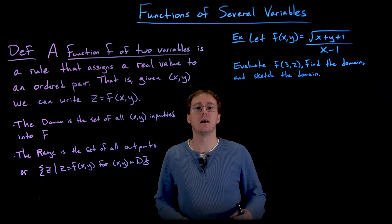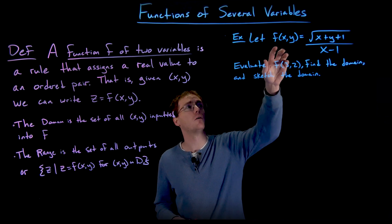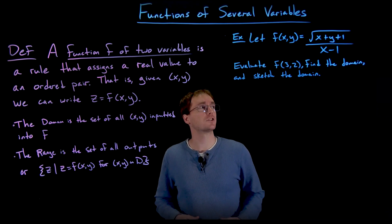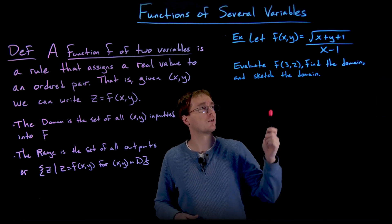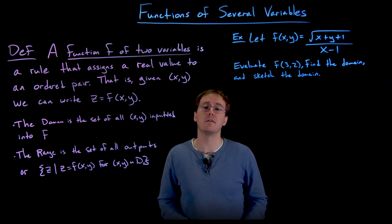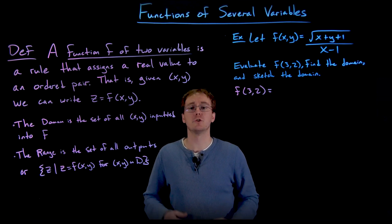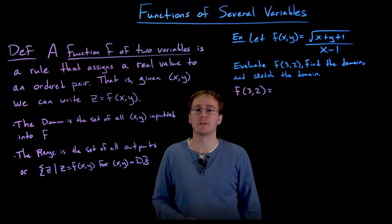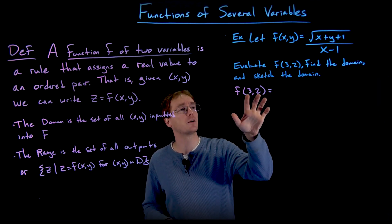In this exercise, we're asked to evaluate the function at the point three comma two, find the domain, and sketch the domain. Evaluating a function of two or more variables isn't too tricky — you find the values for your inputs, plug them into the appropriate places, and simplify. We just have to keep everything straight and in the right order. The first variable in the input is x and the second is y.